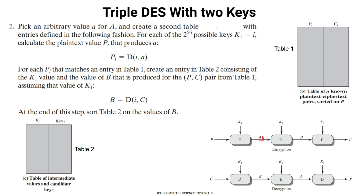In the second step, we pick a value and form a second table with entries. We try all 2 raised to 56 possible values of K1 to encrypt the plaintext value P, computing A1 as a candidate for intermediate value A. Here, the index I corresponds to key K1. For each K1, we compute the corresponding A value and look it up in the first table.